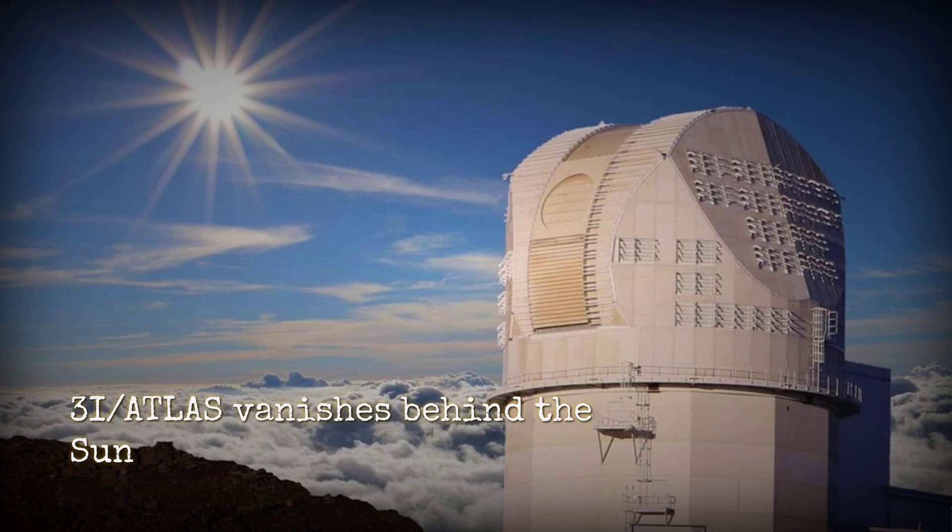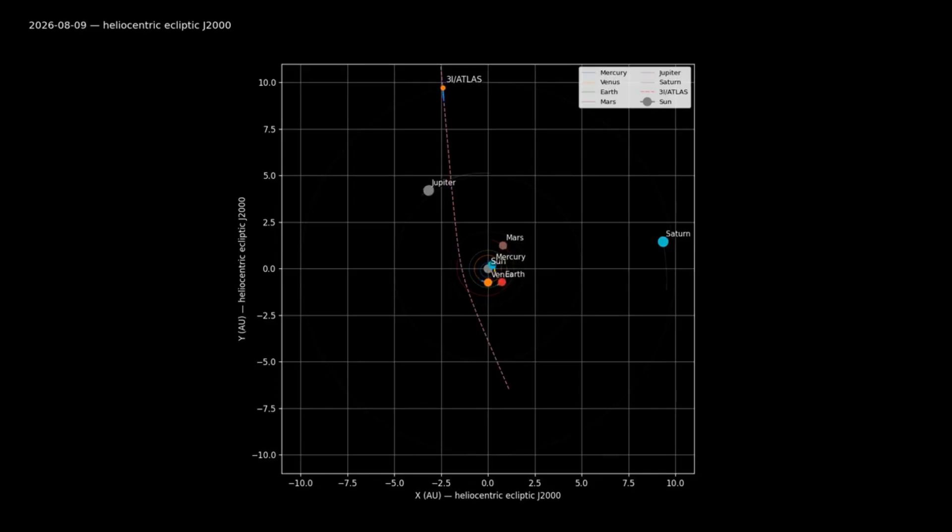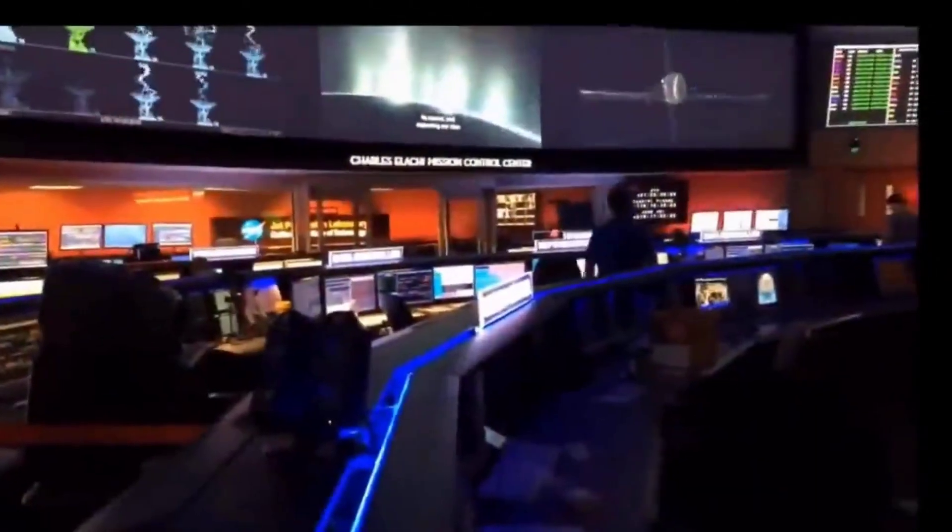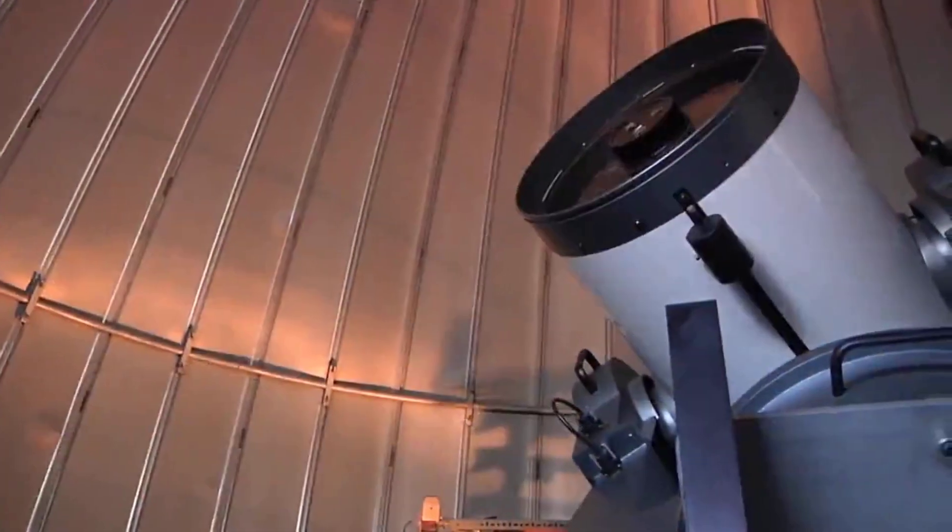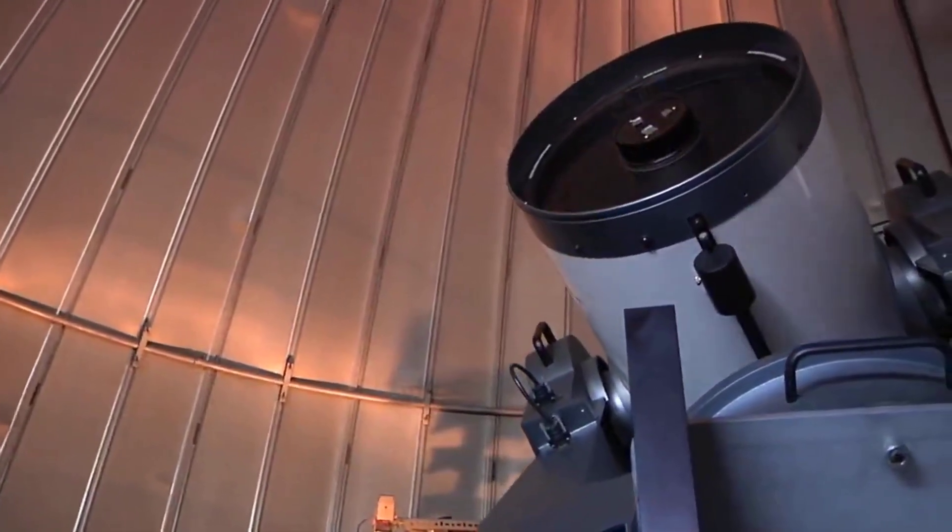The Interstellar Visitor 3I-Atlas vanishes behind the glare of the sun. Earth's observatories blinded. NASA and the European Space Agency forced into a total data blackout. Official protocols demand silence. High-resolution eyes shut down.